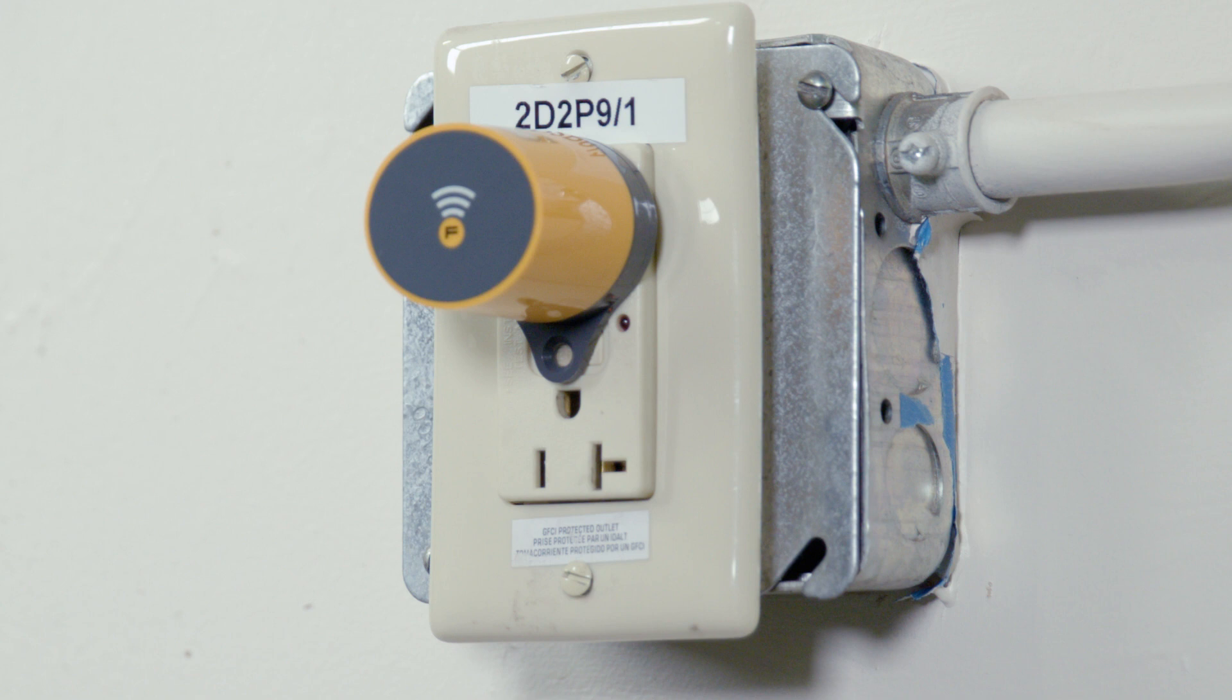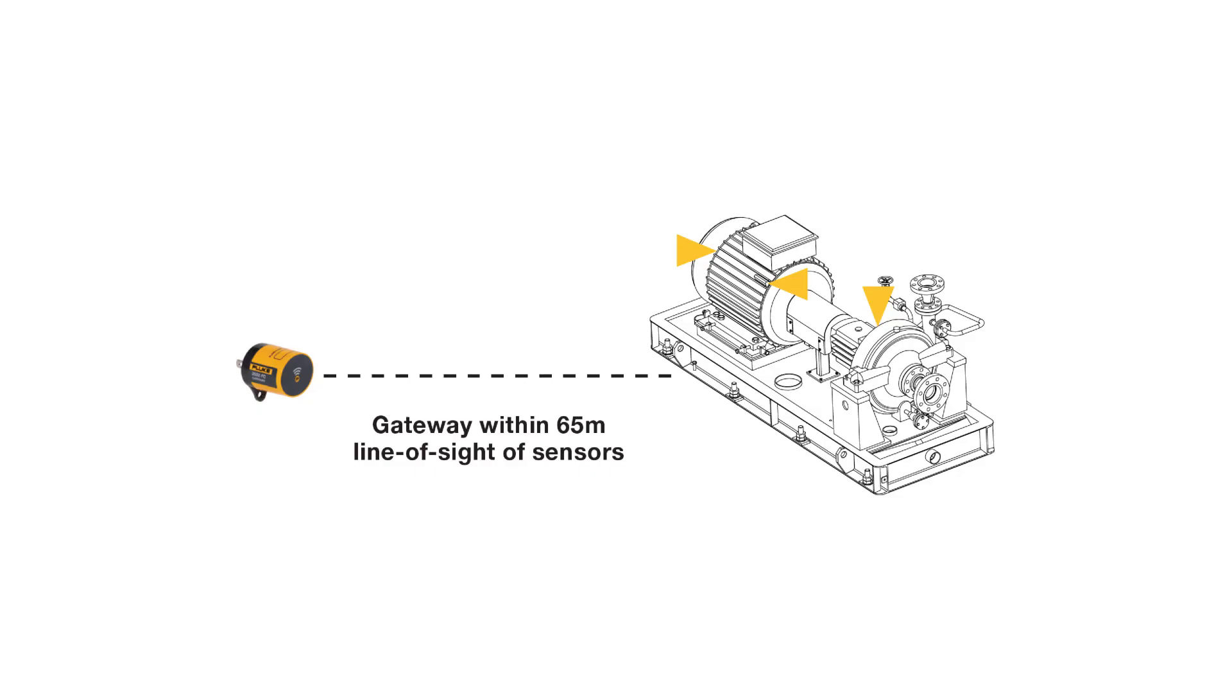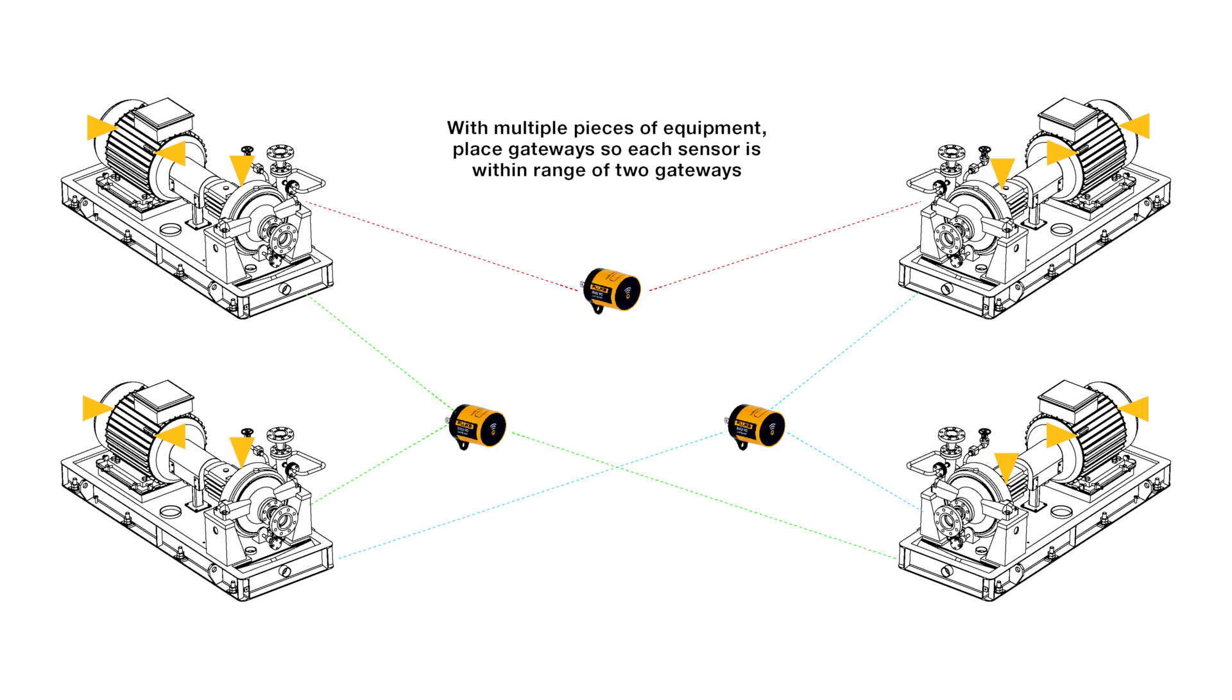If your connection is good, you are ready to permanently mount the sensor. You can install all four of your sensors within the coverage area of your gateway or purchase more gateways and monitor a larger area.